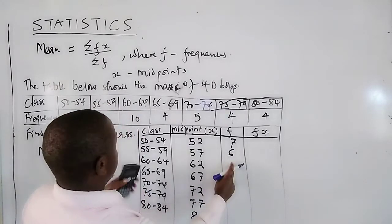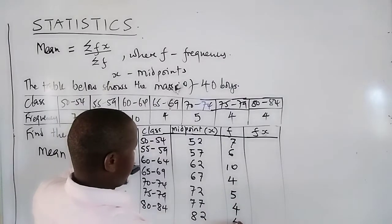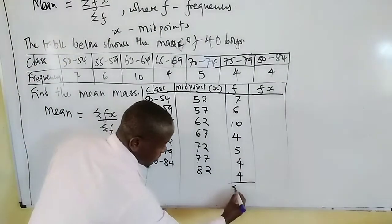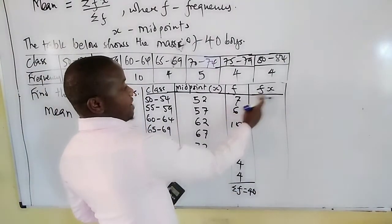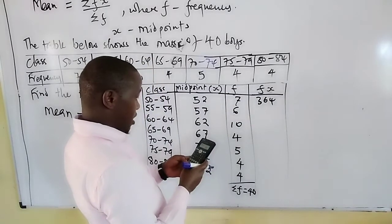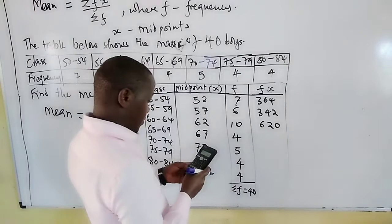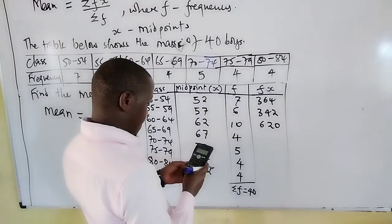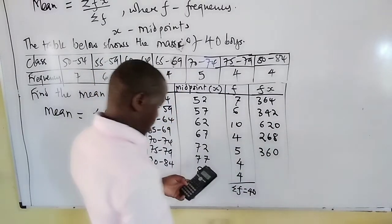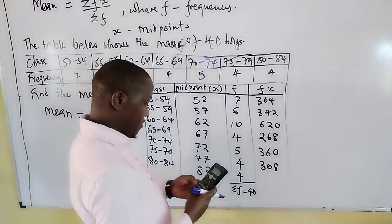We can arrange the frequencies: 7, 6, 10, 4, 5, 4, and 4. First we get the sum of all these frequencies, which is 40. Now we calculate fx: 52 multiplied by 7 gives 364; 57 multiplied by 6 gives 342; 62 by 10 gives 620; 67 by 4 gives 268; 72 by 5 gives 360; 77 by 4 gives 308; and lastly 82 by 4 gives 328.